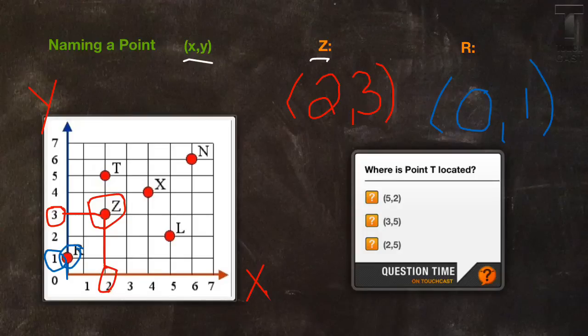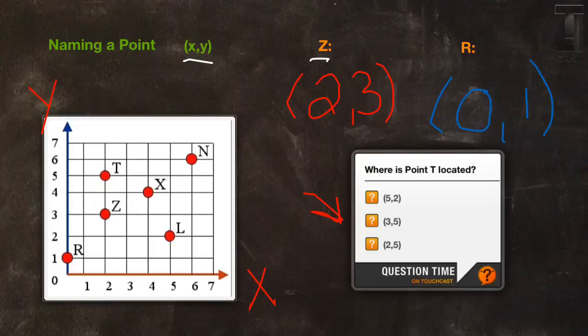Now it's your turn to do this on your own. Figure out where point t is located, and you can actually click inside of this little box and select the answer. I do expect every single person to do this. Once you've done that, we're done with this video — don't forget to complete your reflection at the end, and check out my next video about order of operations.